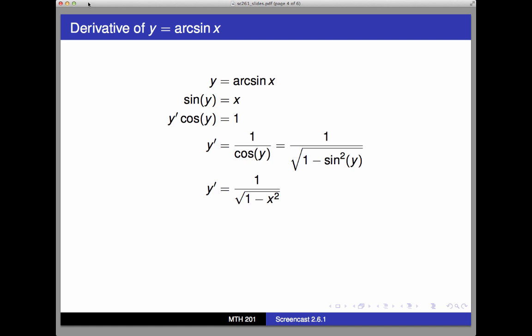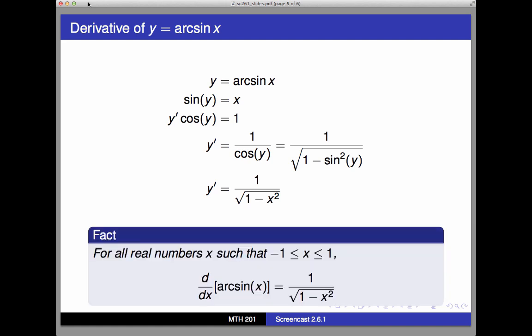Now the fundamental trigonometric identity says that sine squared y plus cosine squared y equals 1. So therefore, if sine of y equals x, then sine squared of y equals x squared. And so solving for cosine y, we get cosine y equals the square root of 1 minus x squared. That allows us to simplify the derivative to y prime equals 1 over the square root of 1 minus x squared, and that's the derivative of arc sine of x.